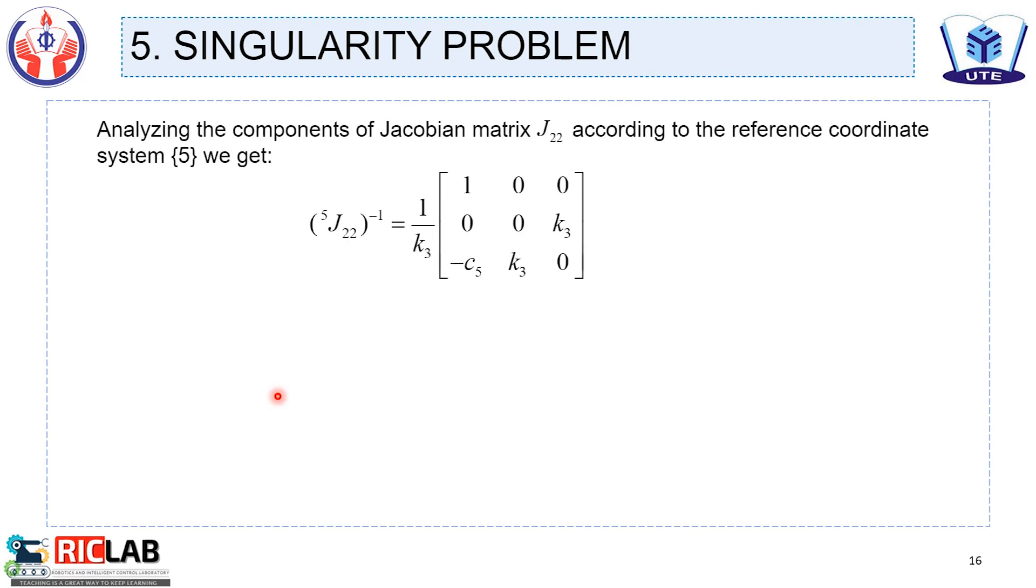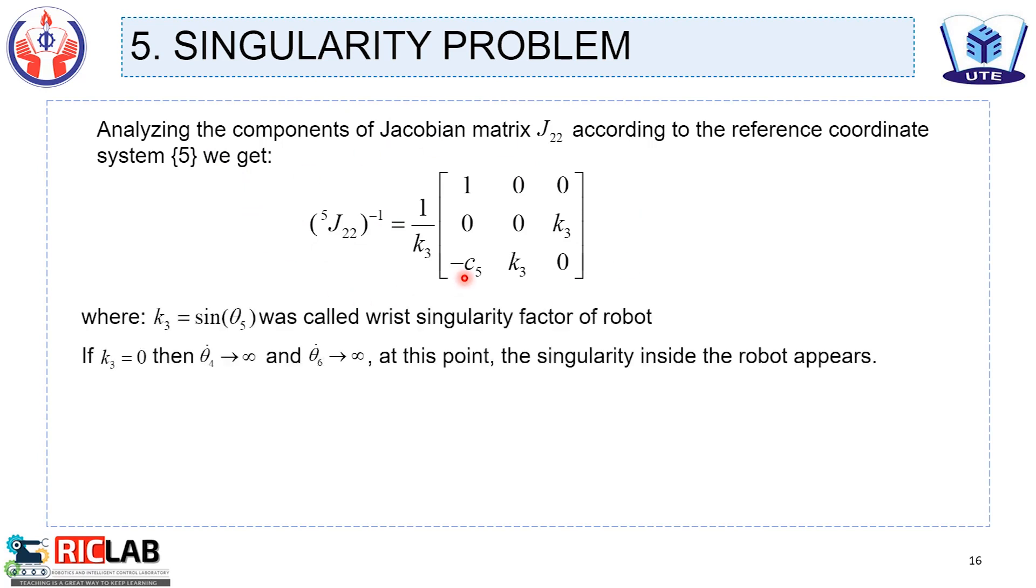Analyzing the components of Jacobian matrix J according to the reference coordinate system 5, we get that the third case equals sin theta 5, which is called wrist singularity factor of robots. If the third case equals 0, then theta 4 dot goes to infinity and theta 6 dot goes to infinity. At this point, the singularity inside the robot appears.